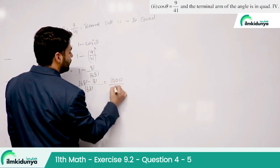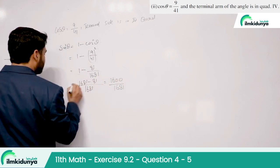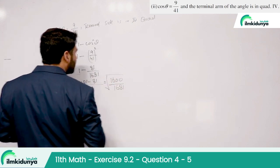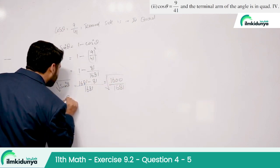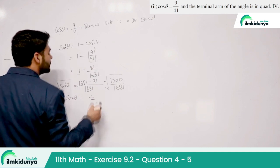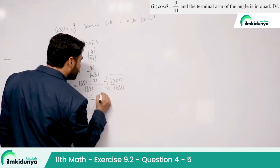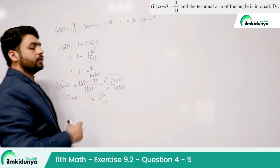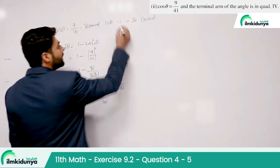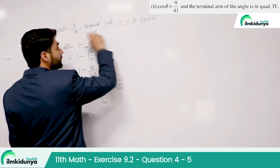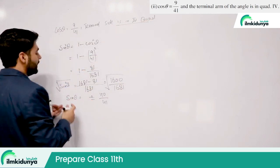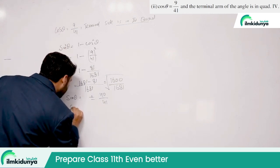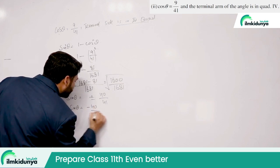That gives 1600/1681. Now we have sin²θ. Applying the square root, sin θ = ±40/41. Now we choose positive or negative — since the terminal side is in the fourth quadrant, sin is negative. So sin θ = −40/41.